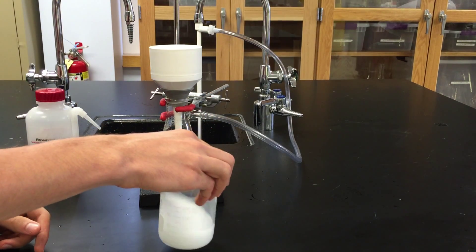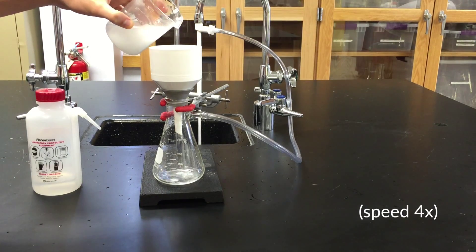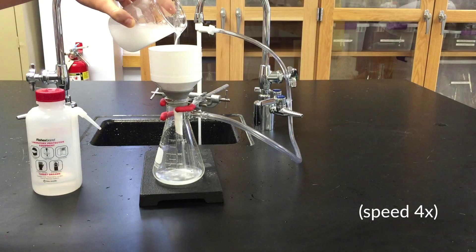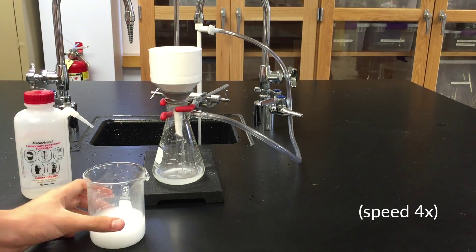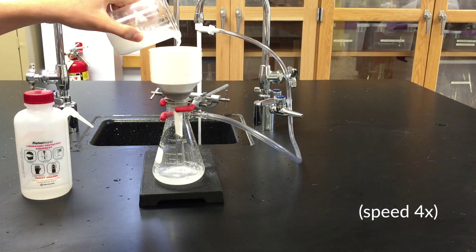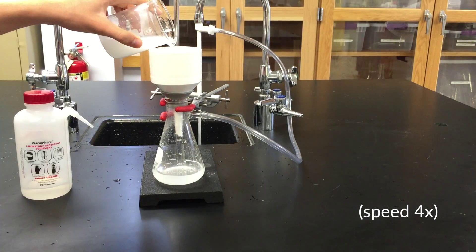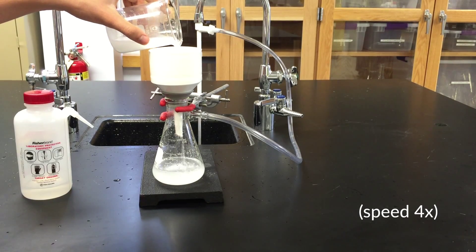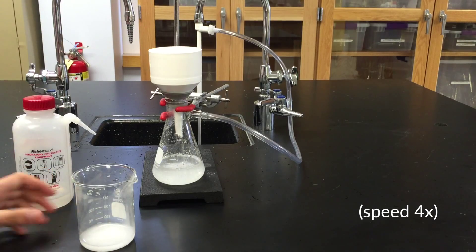Now take your solution from which you want to filter out the precipitate and slowly pour it into the center of the filter paper. Don't go too fast or some of the precipitate might get into the flask. Depending on the strength of the water flow, the suction from the faucet might be more or less. As a result, the filtrate can sometimes be murky and you might have to run it through the filter again.